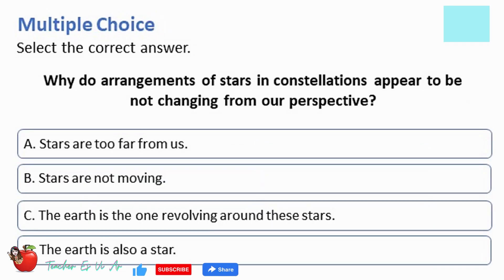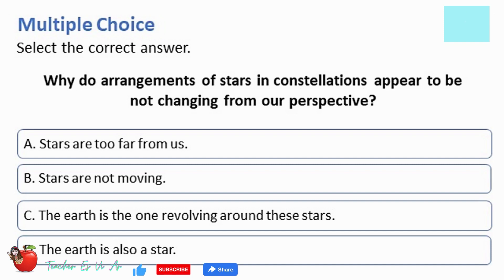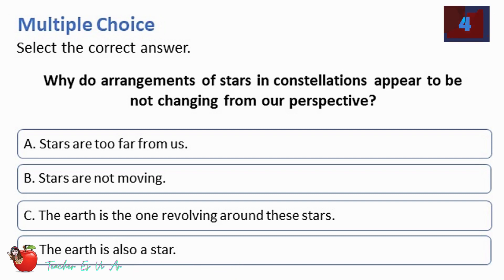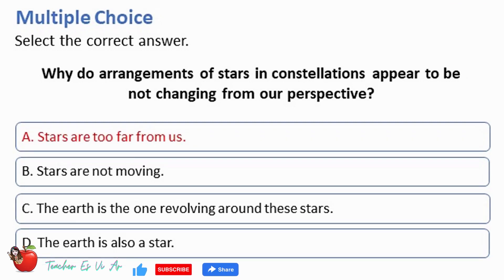Multiple choice, select the correct answer. Why do arrangements of stars in constellations appear to be not changing from our perspective? A. Stars are too far from us. B. Stars are not moving. C. The Earth is the one revolving around these stars. D. The Earth is also a star. The correct answer is A — Stars are too far from us.